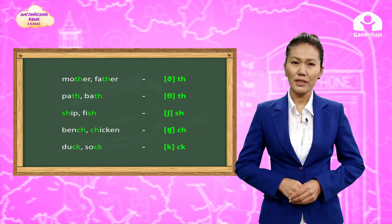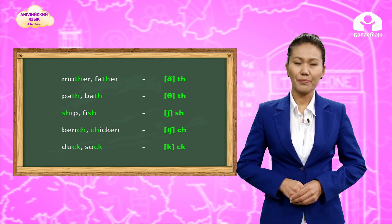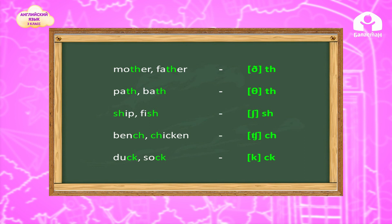Look at the pictures. Let's read the words. What do you see? Father, mother — the letters make the 'TH' sound. Duck — letters C and K make the sound 'K'.